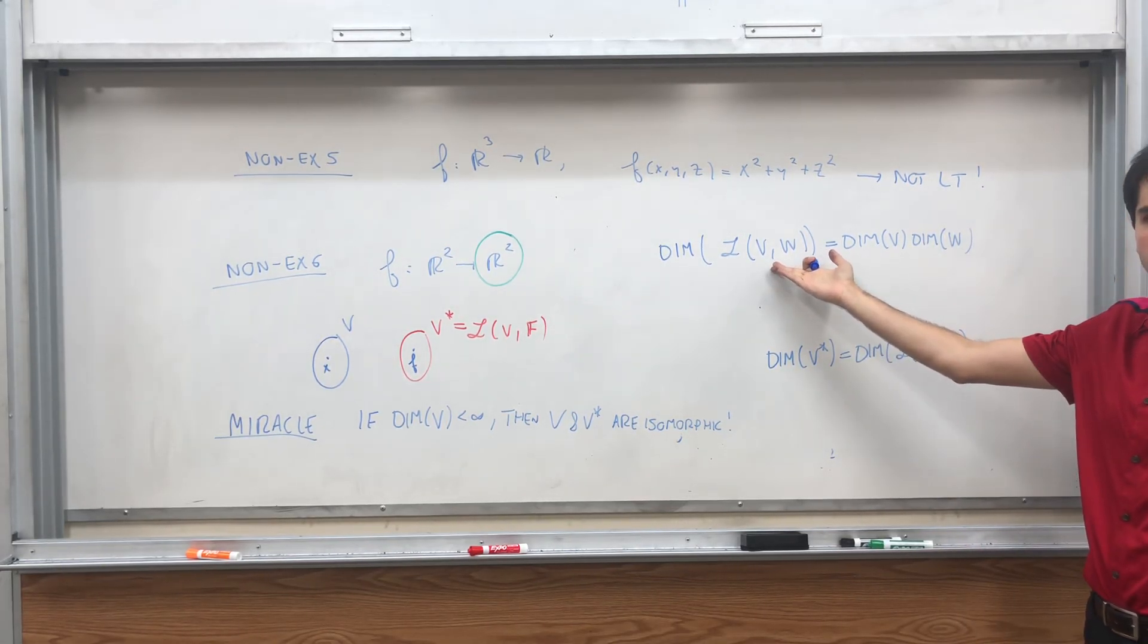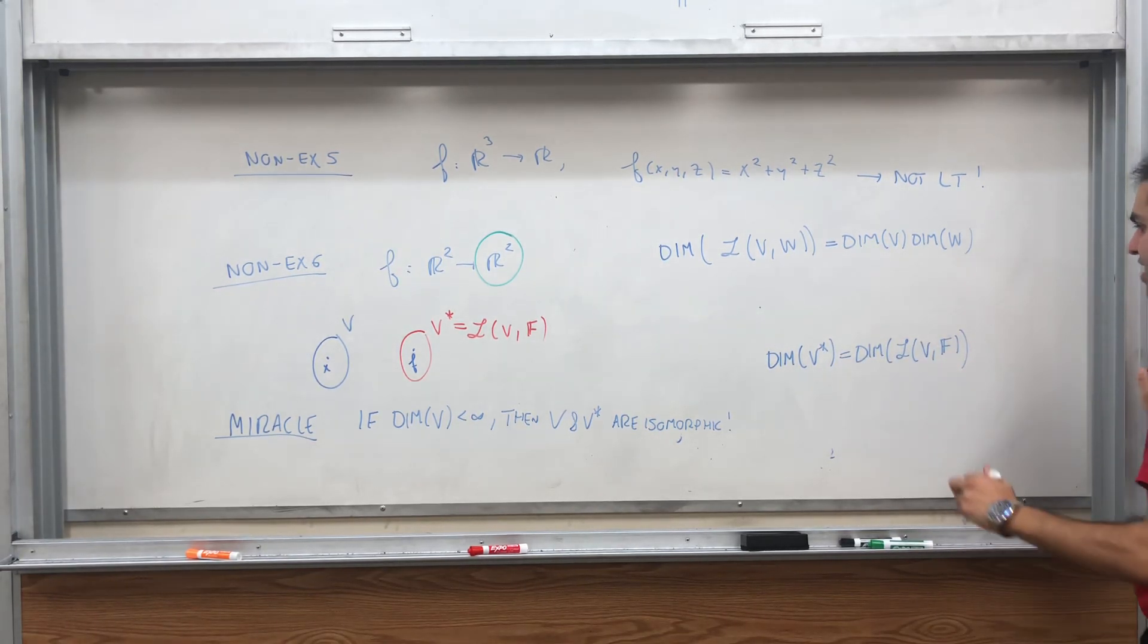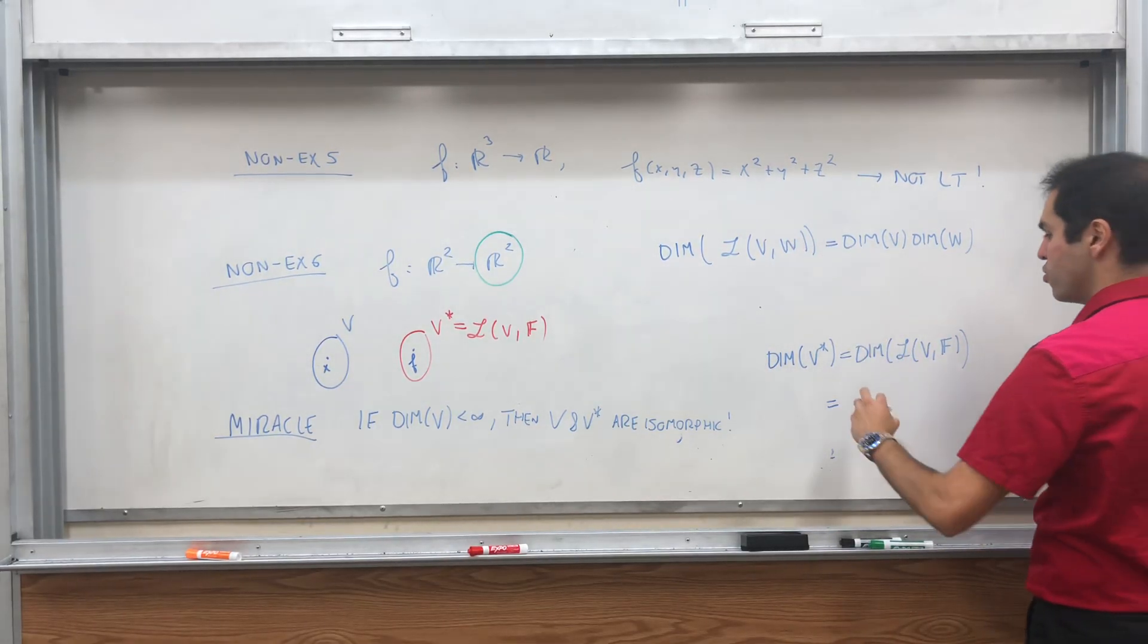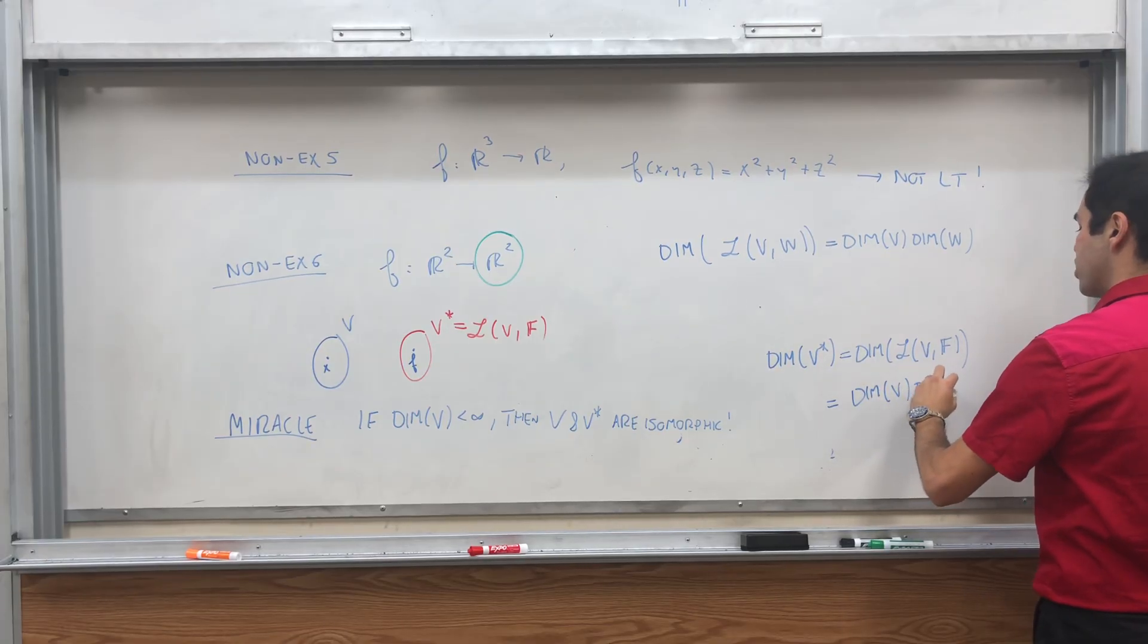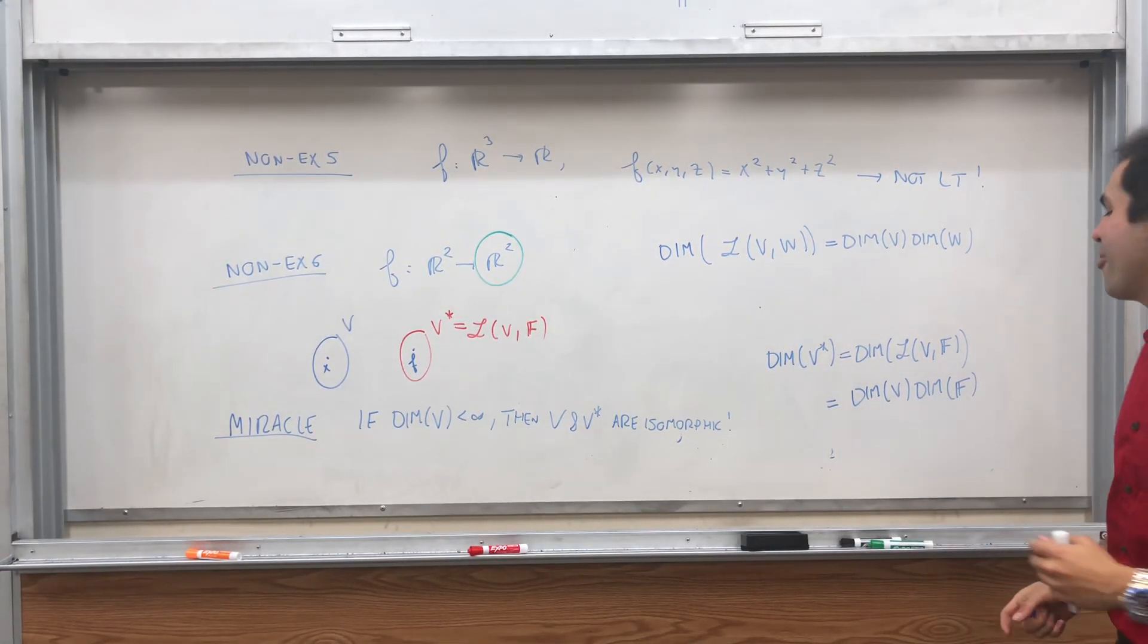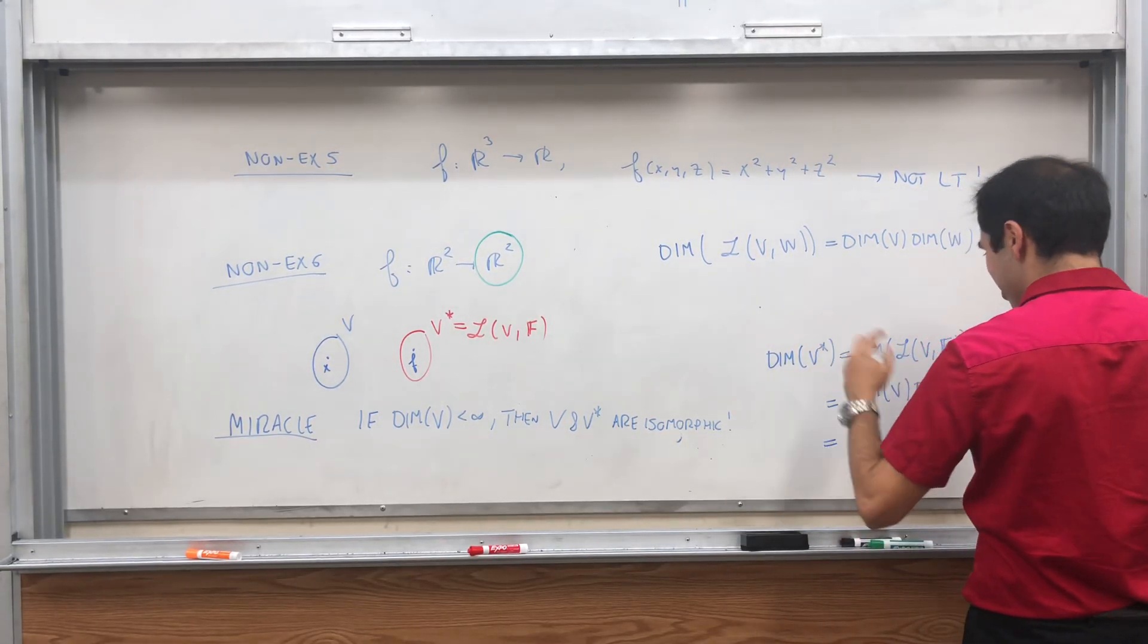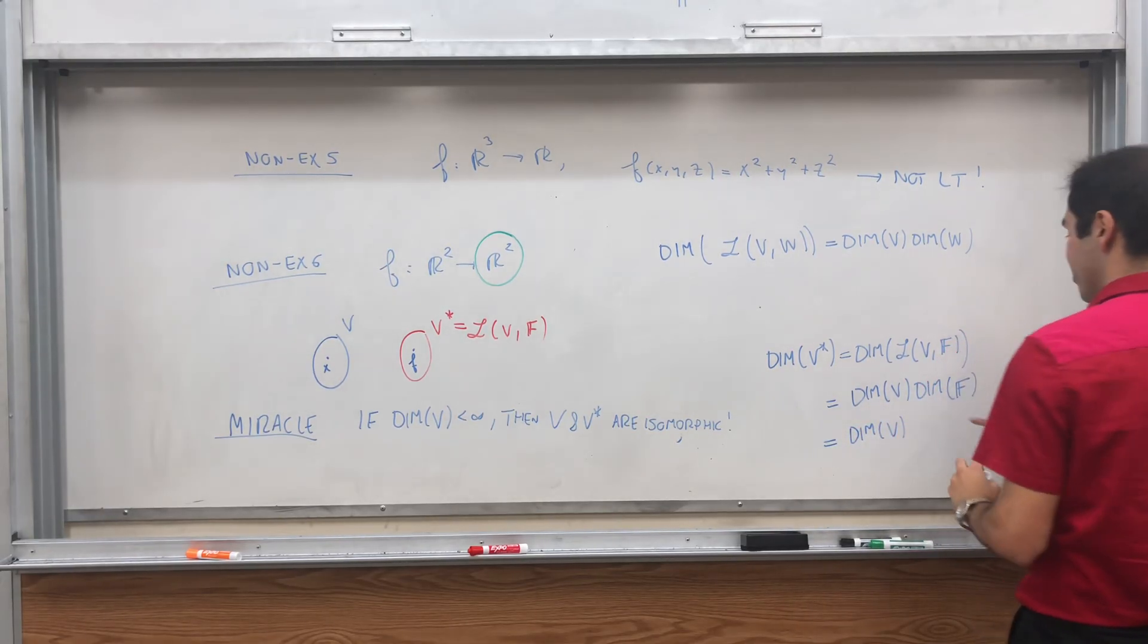So in general, the dimension of L of V, W equals to the dimension of V times the dimension of W. And this is just a generalization of this. In particular, since F is a vector space, this equals to the dimension of V times the dimension of F. But F is one dimensional, a basis is just a number one, because you are number one. Also, yeah, because there's just one element in the basis.